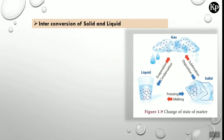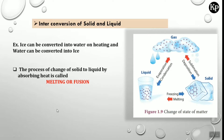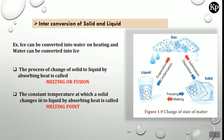Let's see one by one. Inter-conversion of solid and liquid: for example, ice can be converted into water on heating, and water can be converted into ice on cooling. The process of changing solid to liquid by absorbing heat is called melting or fusion. You can see the ice cube changing to liquid by increasing the temperature.